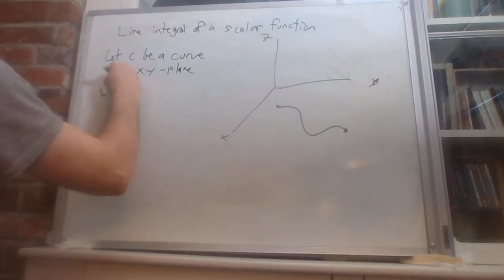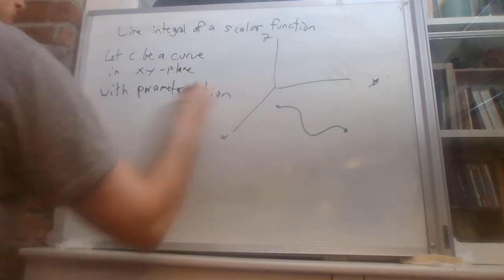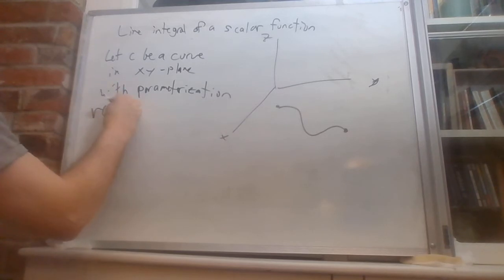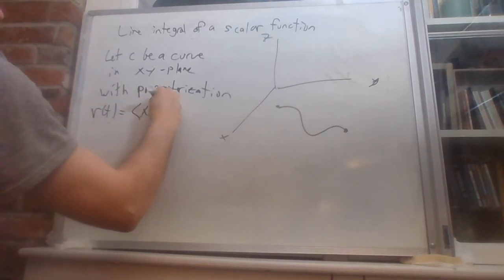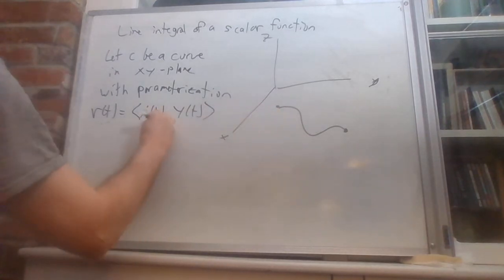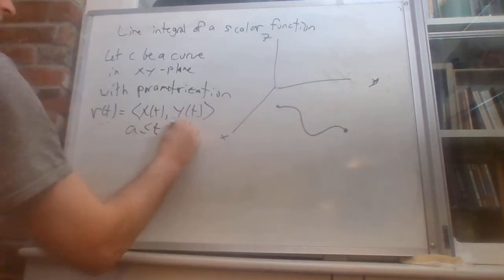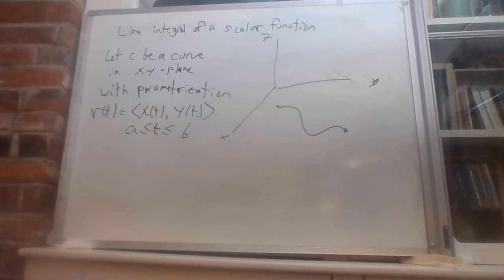We have parameterization R of t equals x of t, y of t. So at each time t, we get an x value and a y value. This thing doesn't go on forever—it's for t between some a and some b.